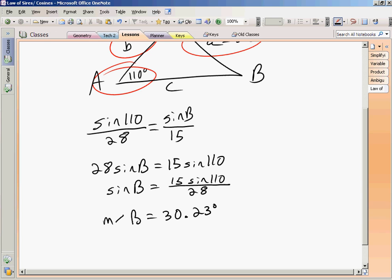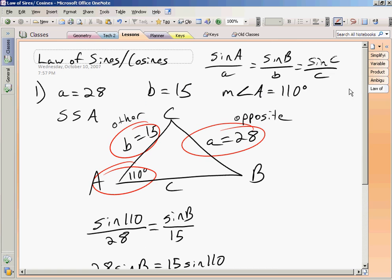So that's the measure of angle B. So now if I look at the information I know, I know two of my angles and two of my sides. I still have one side to find and one angle to find. So I know angle A, side a, angle B, and side b. I need to find c.